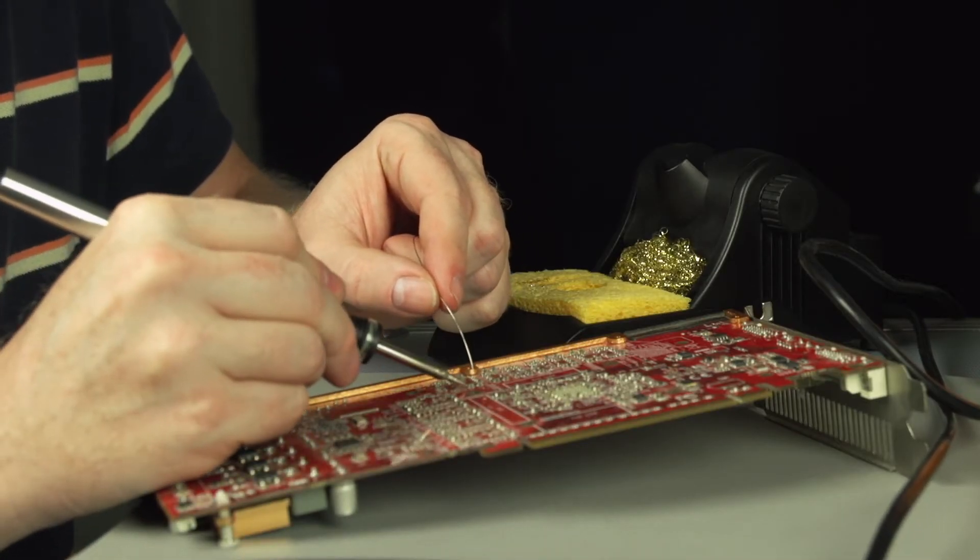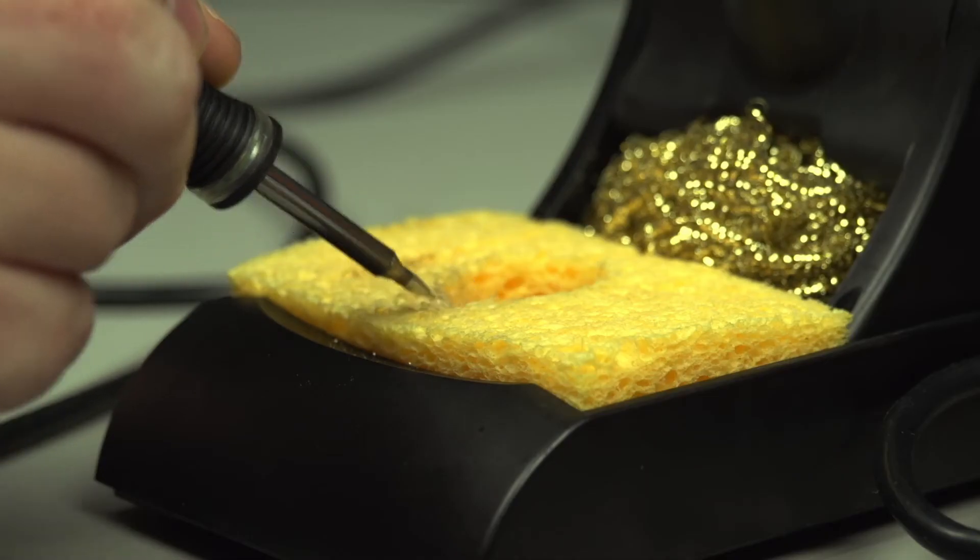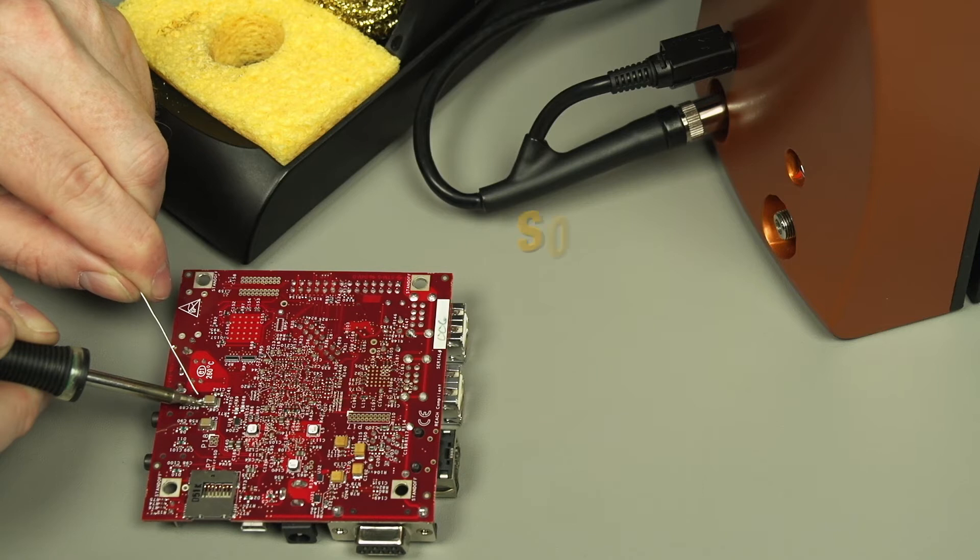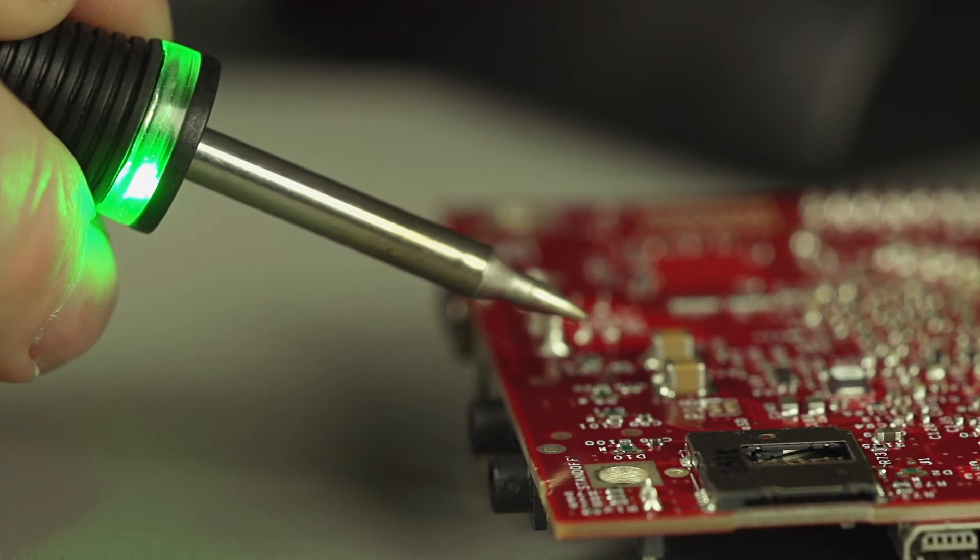Connection Validation provides feedback to the operator via a light ring embedded in the handpiece. Successful intermetallic compound formation triggers a green light, signaling to the operator that the ideal solder joint is created.